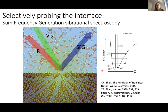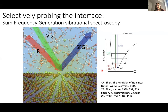From the experimental point of view, in the last decades there has been a tremendous advance of experimental techniques selectively addressing interfaces. One of them is sum frequency generation vibrational spectroscopy, which has permitted essentially to extend the power of IR spectroscopy to the interface. It is capable of providing details of the vibrational spectrum selectively at the thin interfacial layers.